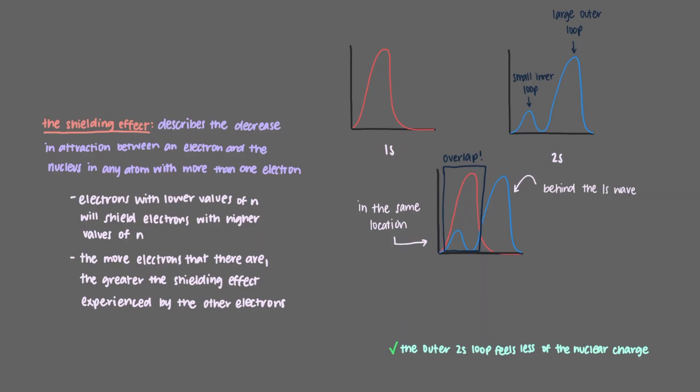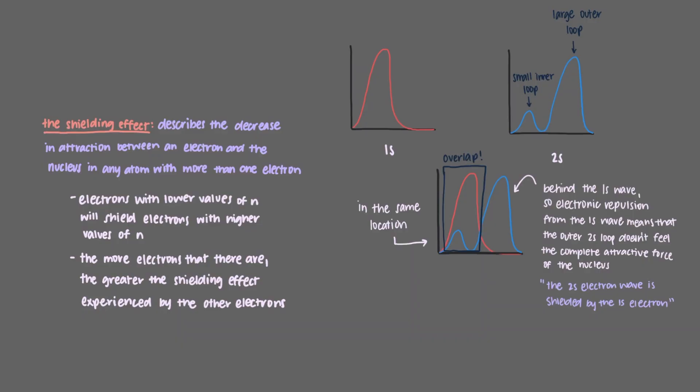The 1s loop is between the nucleus and the outer 2s loop. Electronic repulsion from this 1s wave means that the outer loop of 2s does not feel the complete attractive force of the nucleus. Because of this, we say that the 2s electron wave is shielded by the 1s electron. It will not experience the full nuclear charge.